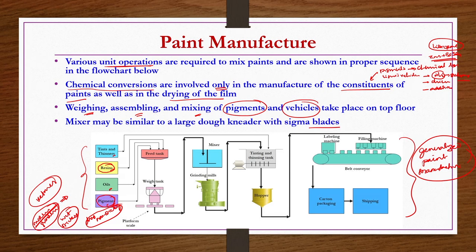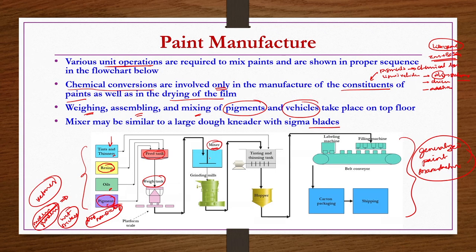Based on the nature of pigments and vehicles, mixers and grinders must be chosen appropriately. If the liquid portion is a viscous resin, the mixer suited for volatile ketone-type liquids will not work properly. Similarly, dry non-sticky pigment behaves differently from wet sticky pigment. Proper grinding and proper mixing determine the success of paint formulation.